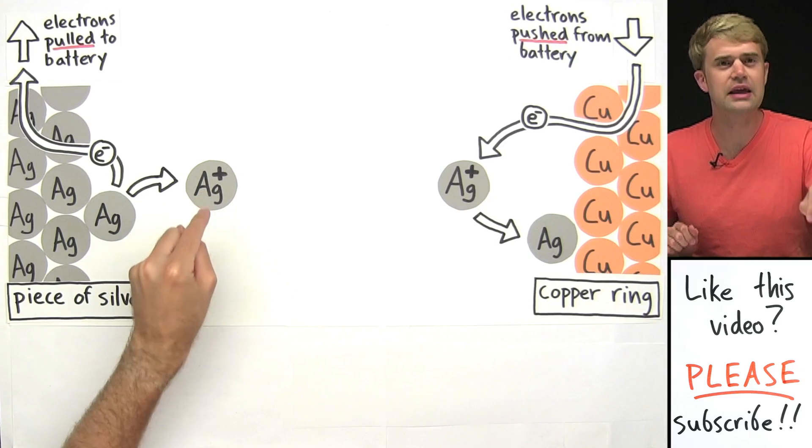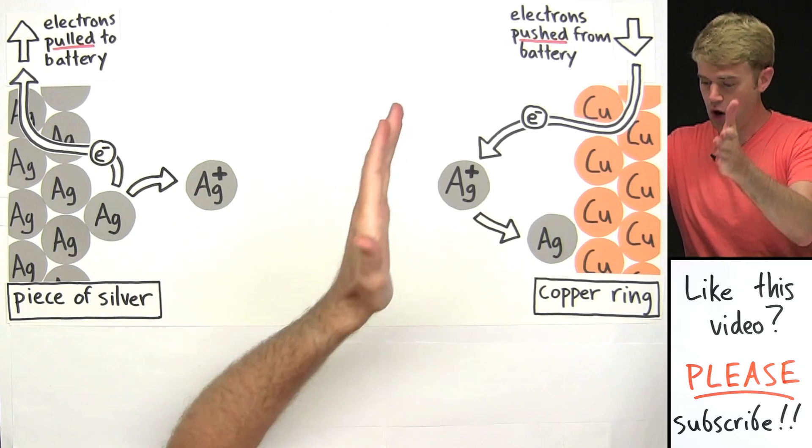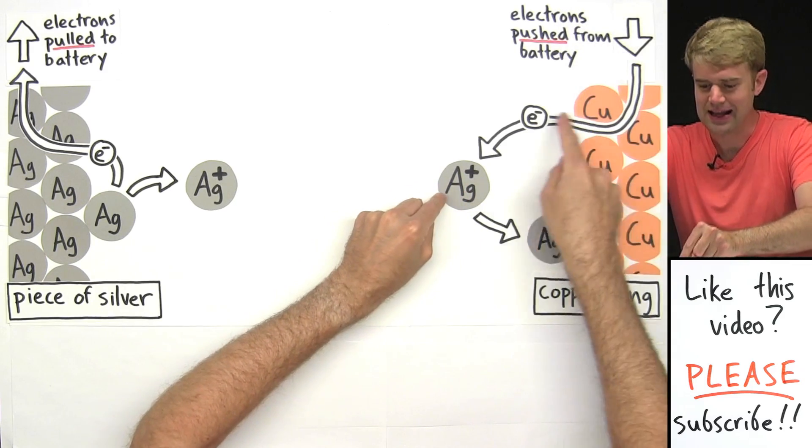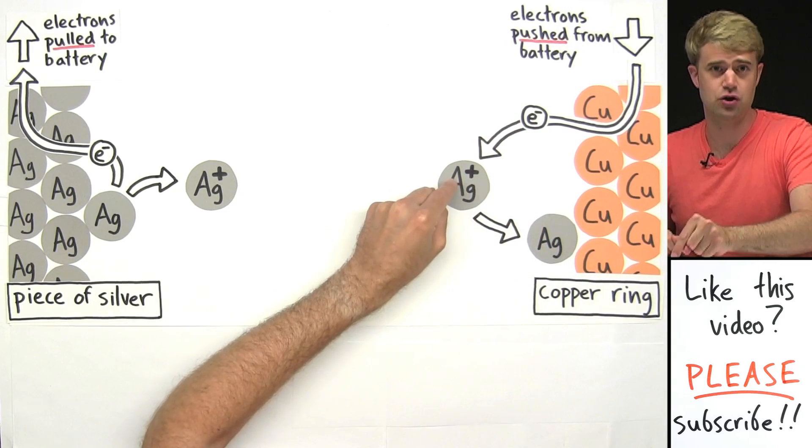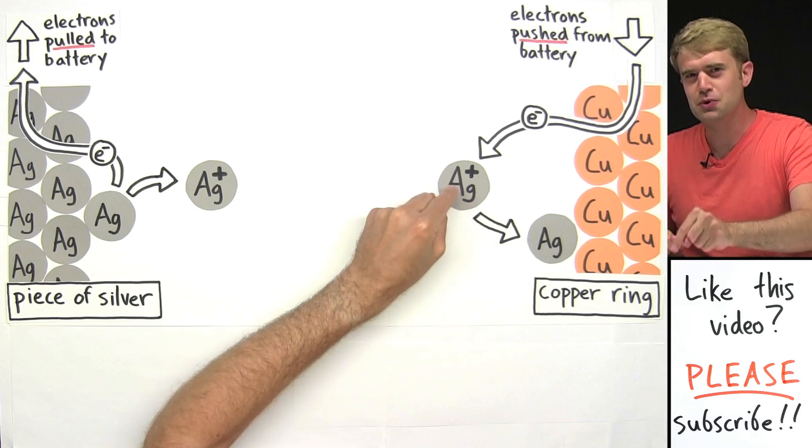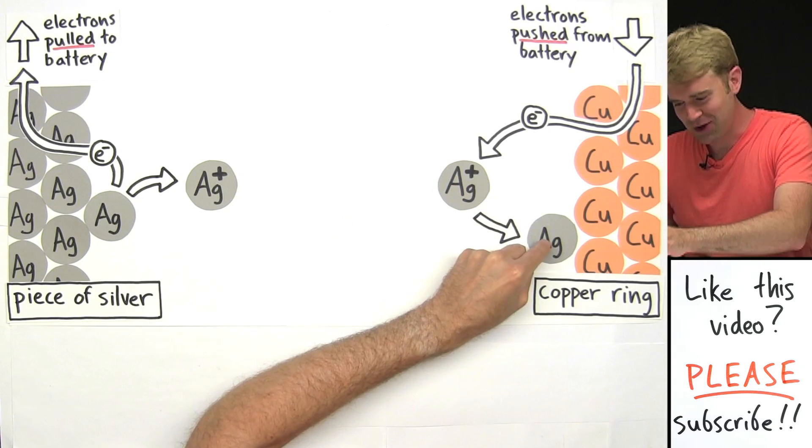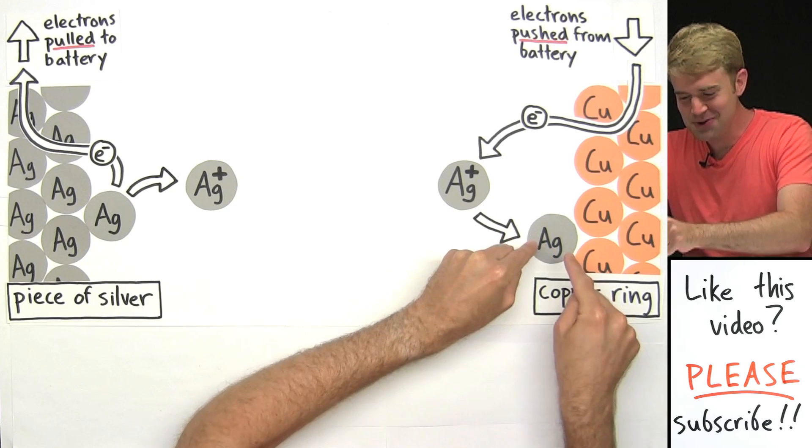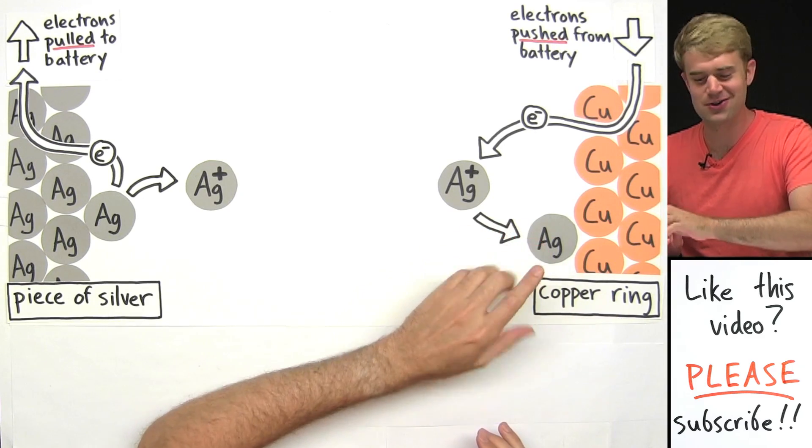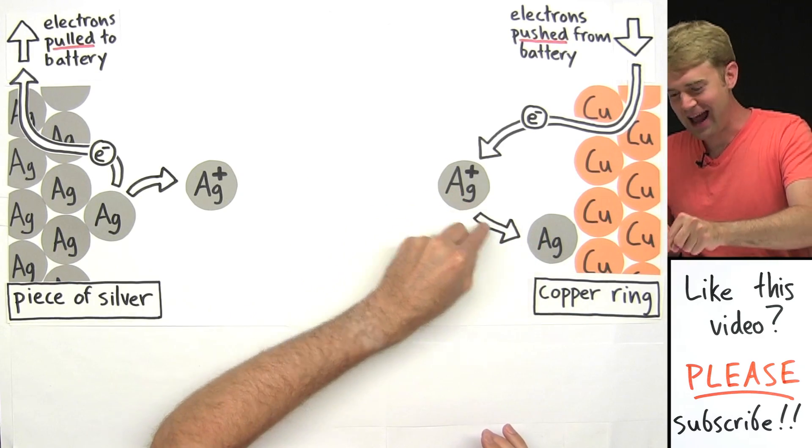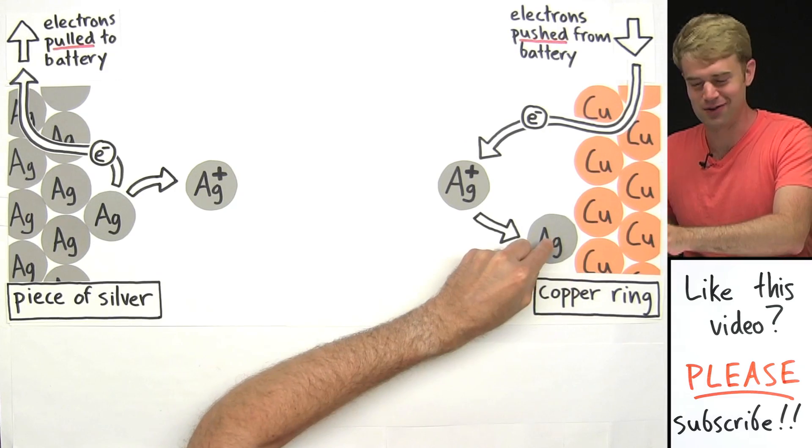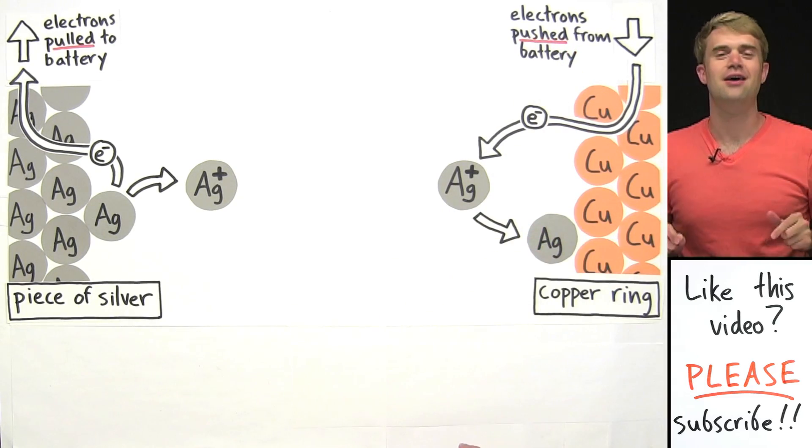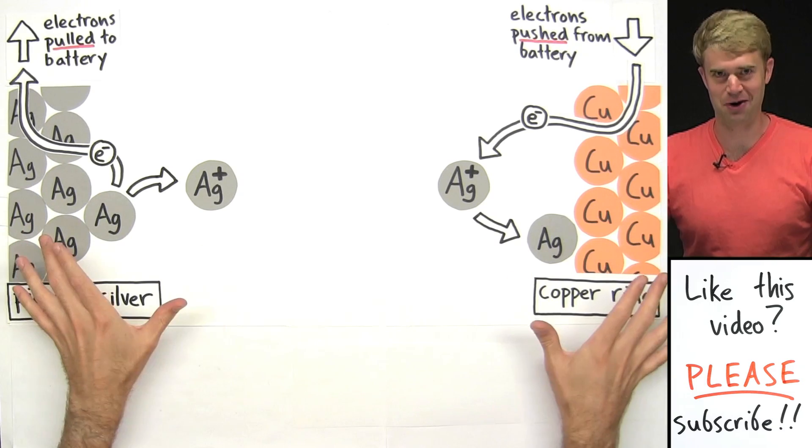Over here on the copper ring, a silver one-plus ion gains an electron. This ion loses its charge and turns into a neutral silver atom. This neutral silver atom can no longer dissolve in the solution, and it now forms solid silver as it sticks to the surface of the ring. So that's how you show the process using a diagram.